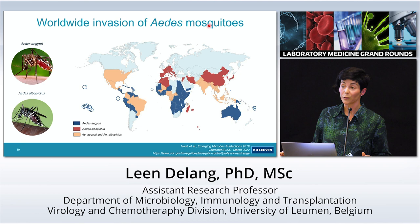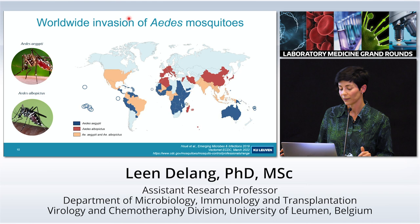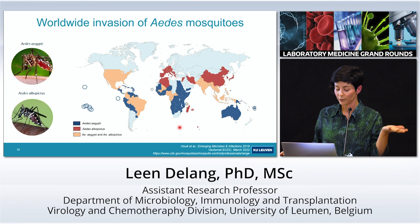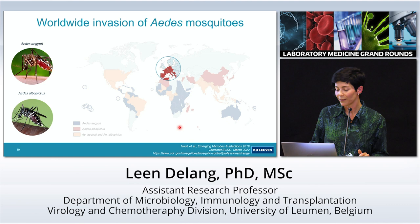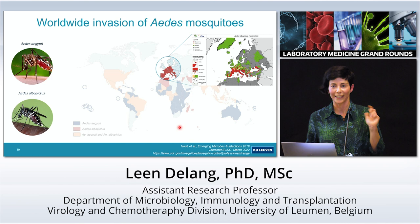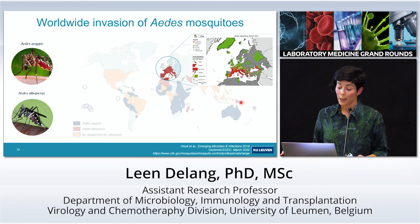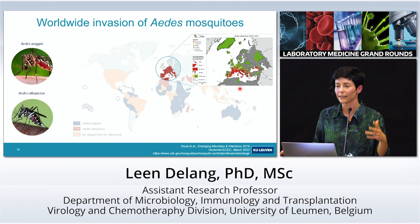One of the reasons arboviruses are a worldwide problem is the invasion of vector species. The most efficient mosquito species for most arboviruses are Aedes aegypti and Aedes albopictus, the tiger mosquito, and they are distributed worldwide. In Europe we currently only have the tiger mosquito, with the exception of Madeira and eastern Turkey, and it is established mostly in southern Europe like Italy, Greece, and southern France, but also now in Germany and northern France.